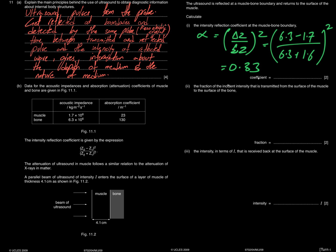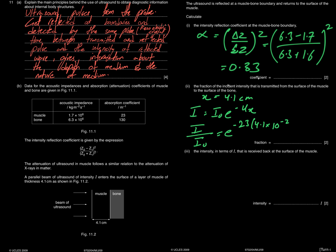The next part asks for the fraction of intensity transmitted from the surface of the muscle to the surface of the bone. The beam travels 4.1 cm through muscle. Using I = I₀ × e^(−μx), the fraction I/I₀ = e^(−23 × 4.1 × 10⁻²). This gives a fraction of 0.39.